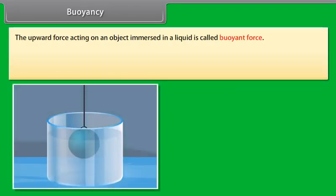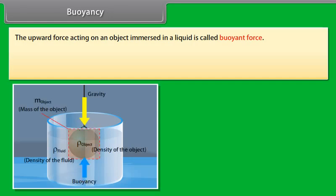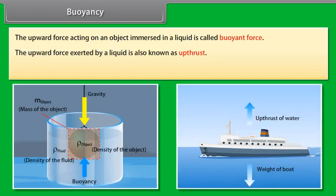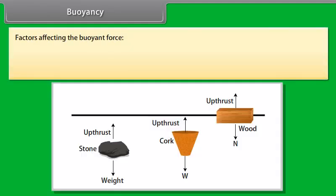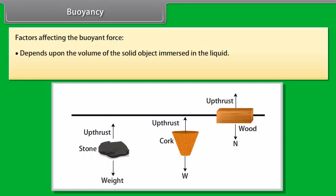Buoyancy: the upward force acting on an object immersed in a liquid is called the buoyant force, also known as up thrust. The tendency of a liquid to exert an upward force on an object placed in it is called buoyancy. Factors affecting buoyancy: it depends upon the volume of the solid object immersed in the liquid, and upon the density of the liquid in which the object is immersed.